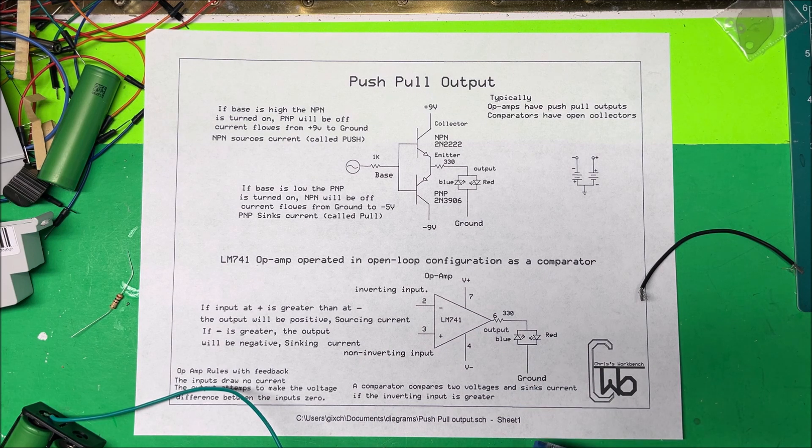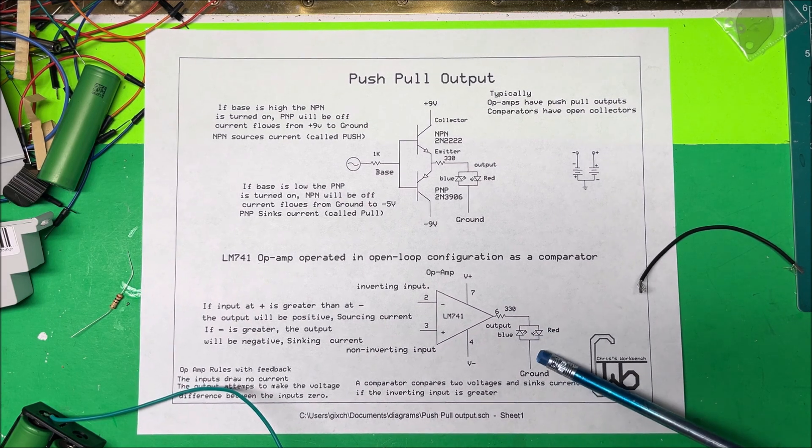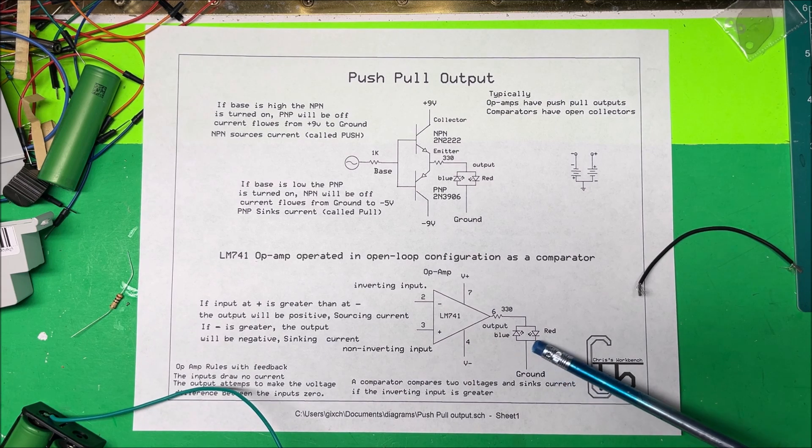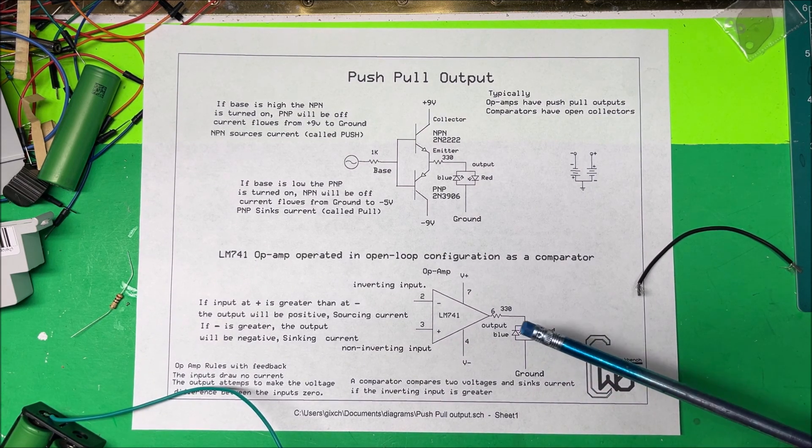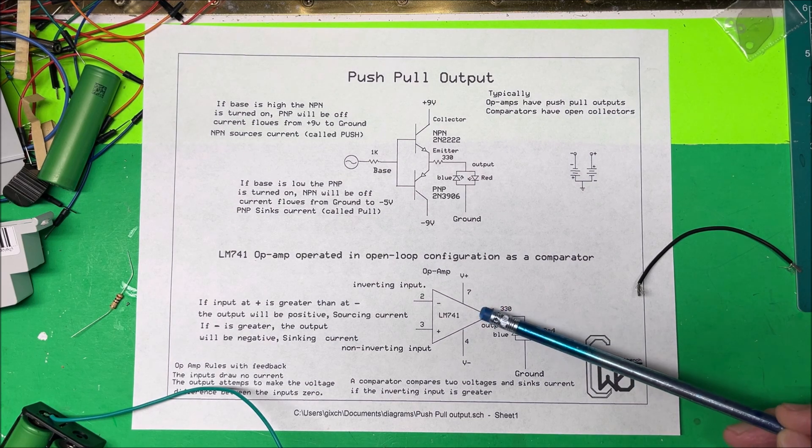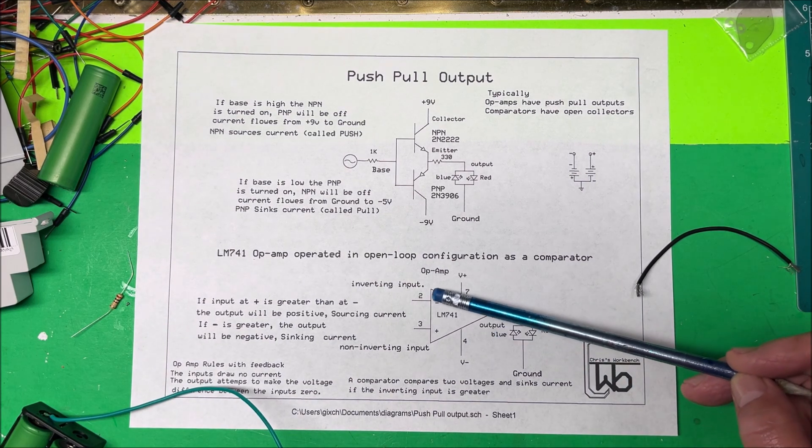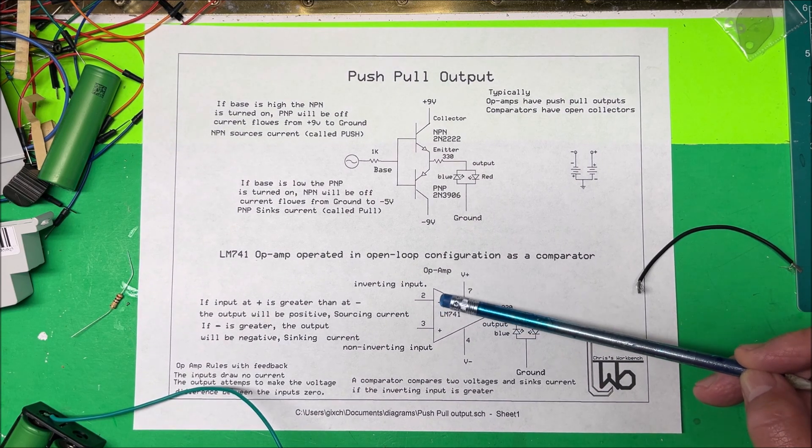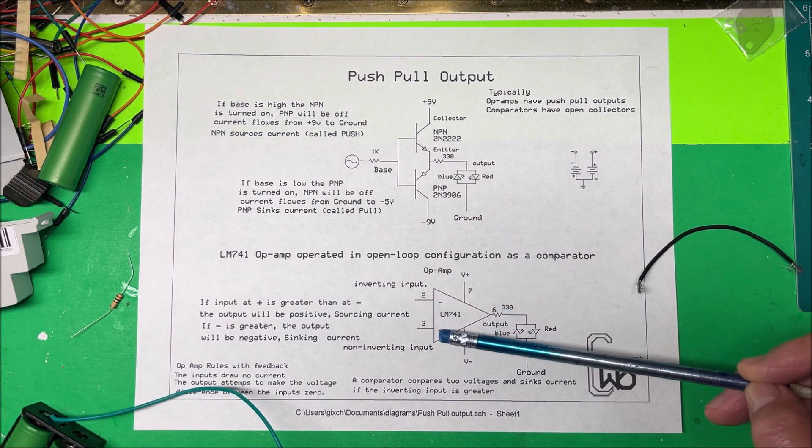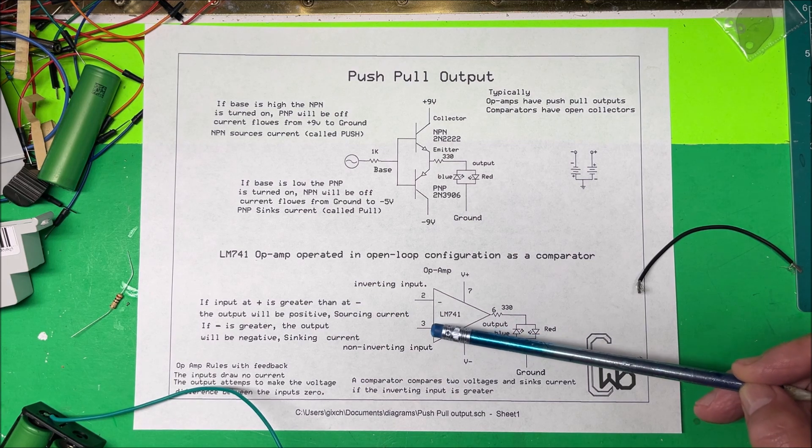So same thing happens here. I've got a red and a blue LED, and if it's red then this is going to be positive, if it's blue this will be negative, depending on your inputs here. You have your inverting input and your non-inverting input.